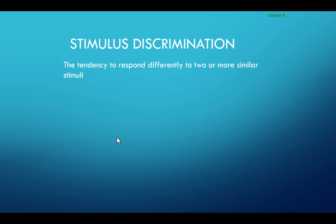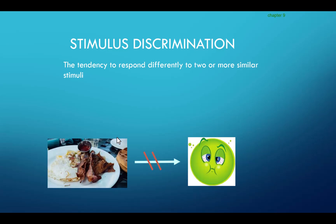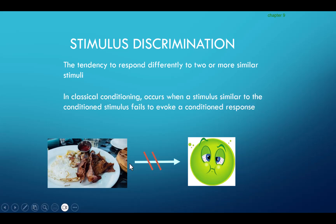Stimulus discrimination, on the other hand, is the tendency to respond differently to two or more similar stimuli. You had a pulled pork sandwich, got sick, so now the thought, sight, and smell of pork makes you nauseous. But then you go out to breakfast and there's bacon on your plate. Bacon is pork, but it's different than pulled pork, and your brain is able to tell the difference between the two stimuli and doesn't respond with the conditioned response. You can discriminate between bacon and pulled pork, so the bacon does not make you nauseous. In classical conditioning, this occurs when a stimulus similar to the conditioned stimulus fails to evoke the conditioned response.